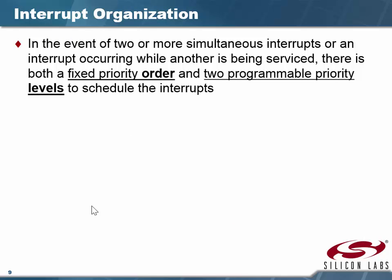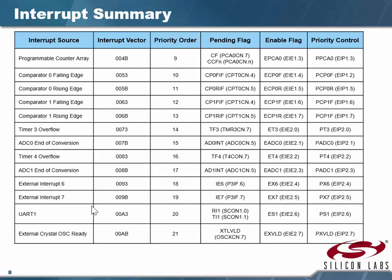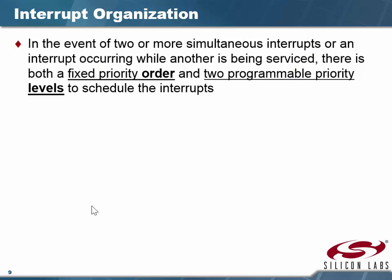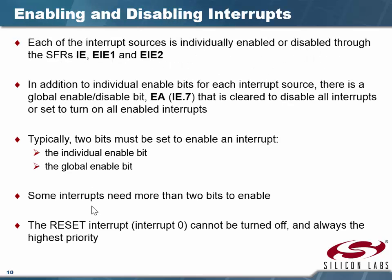In the event of two simultaneous interrupts, or an interrupt occurring while another one is being serviced, there are both fixed and programmable priority levels to schedule the interrupts. If we're servicing timer overflow zero and timer one overflows, we're going to ignore it while servicing the first one. These have a priority — some are more important than others. Remember, when you first power up on reset, all interrupts other than reset are disabled. There are both a fixed order and two programmable priority levels.